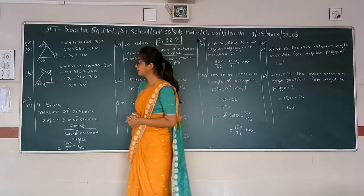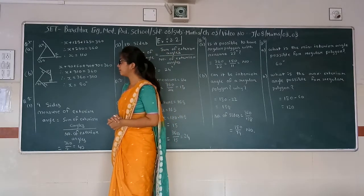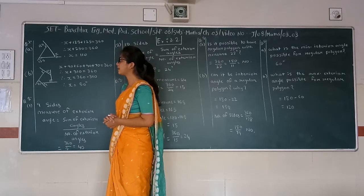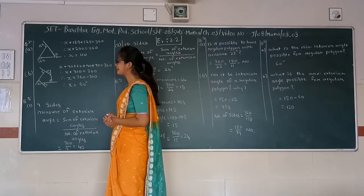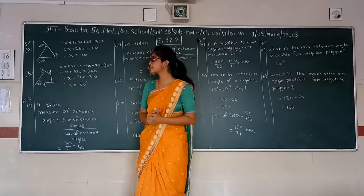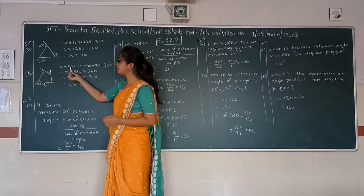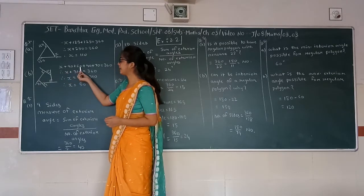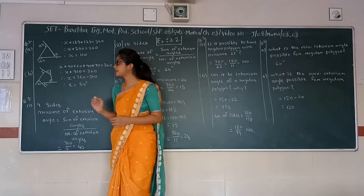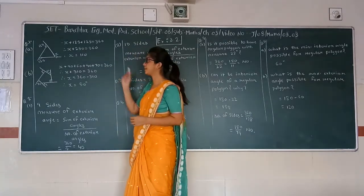Next one. We have values of exterior angles: 60, 60, and two right angles (90°), and one x. So the equation will be x plus 90 plus 60 plus 90 plus 70, and the sum of all exterior angles will be 310.